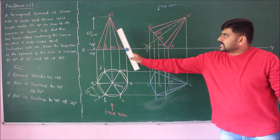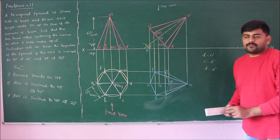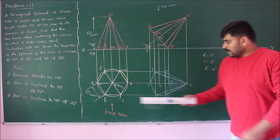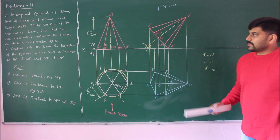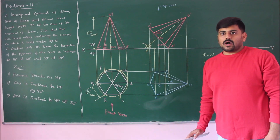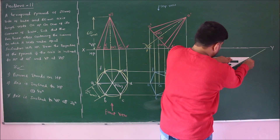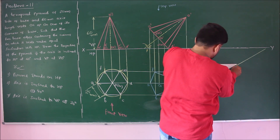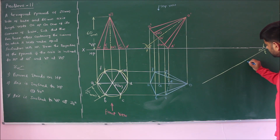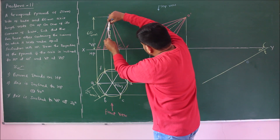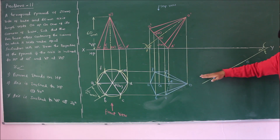In the third position, I should incline the axis at 30 degrees to VP. The true length of the axis is 60 mm, but the apparent axis length is less than 60 mm. To find the beta angle: draw a 30 degree line using a 30-60 set square and mark the 60 mm true axis length on it.